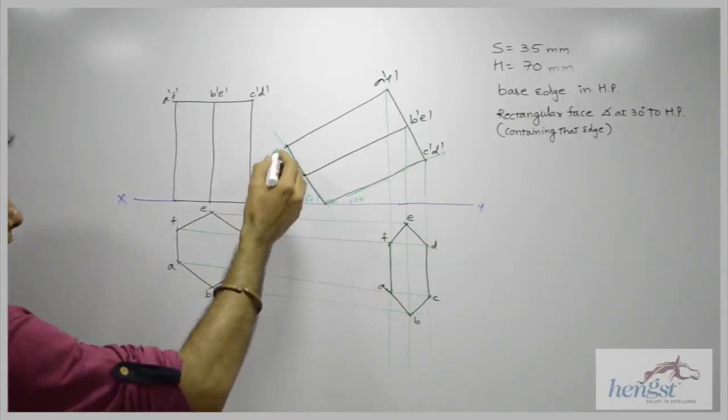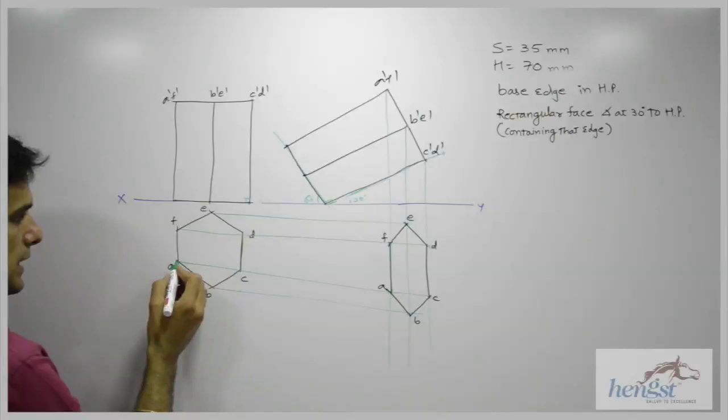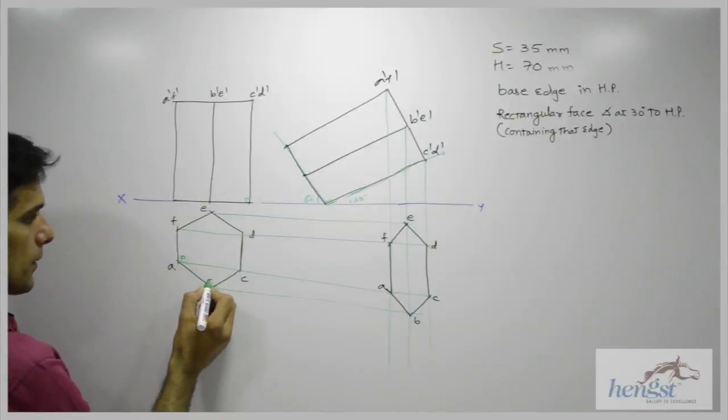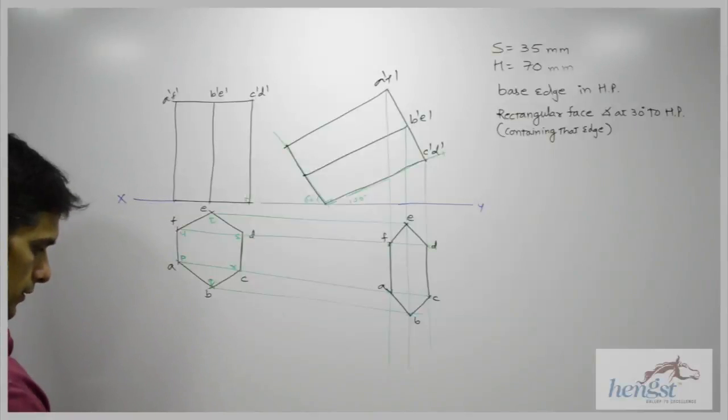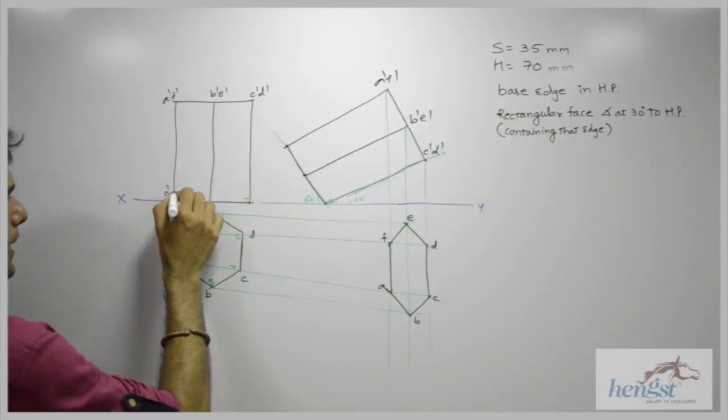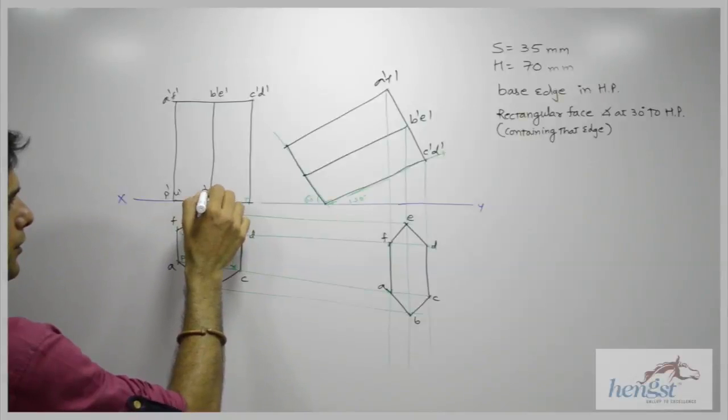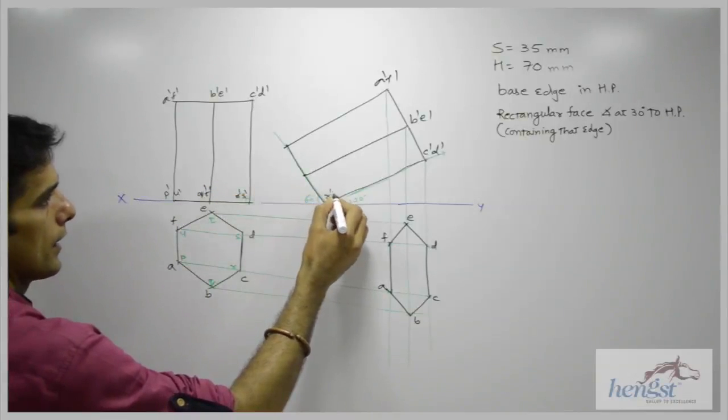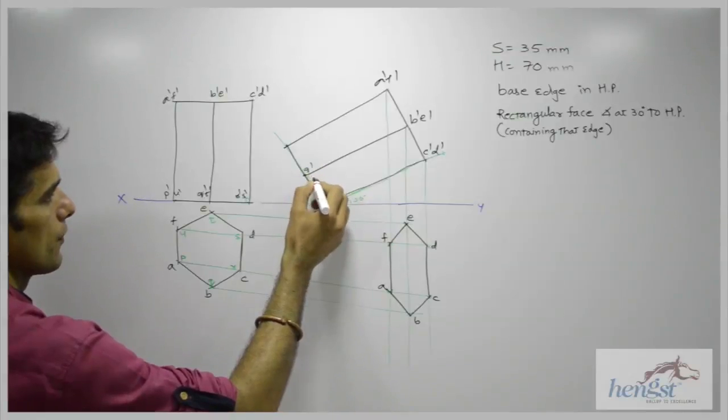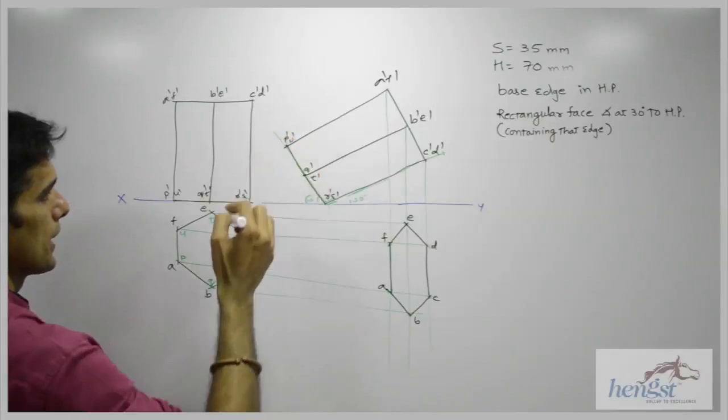Now same way, we can take the lower points also. The lower points I can name as p, q, r, s, t, u. So these points will be p dash, u dash, q dash, t dash, r dash, s dash, q dash, t dash, p dash, u dash.